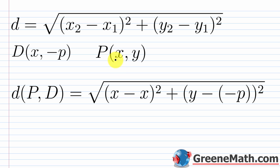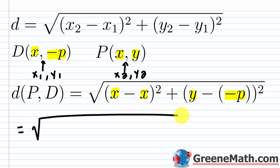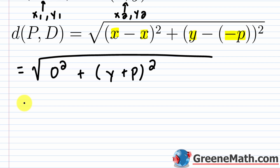For the distance between P(x, y) and D(x, negative p), plugging into the distance formula: x sub 2 minus x sub 1 is x minus x, which is zero, so that term vanishes. Then y sub 2 minus y sub 1 is y minus (negative p), which is y plus p. So this distance simplifies to the square root of (y plus p) squared, which expands to the square root of y squared plus 2py plus p squared.